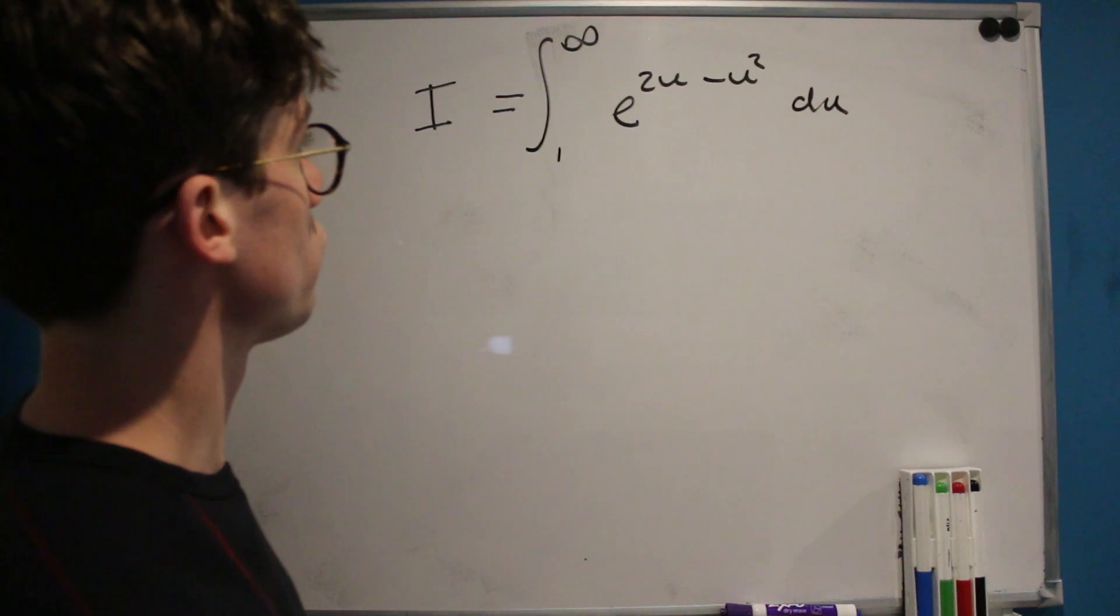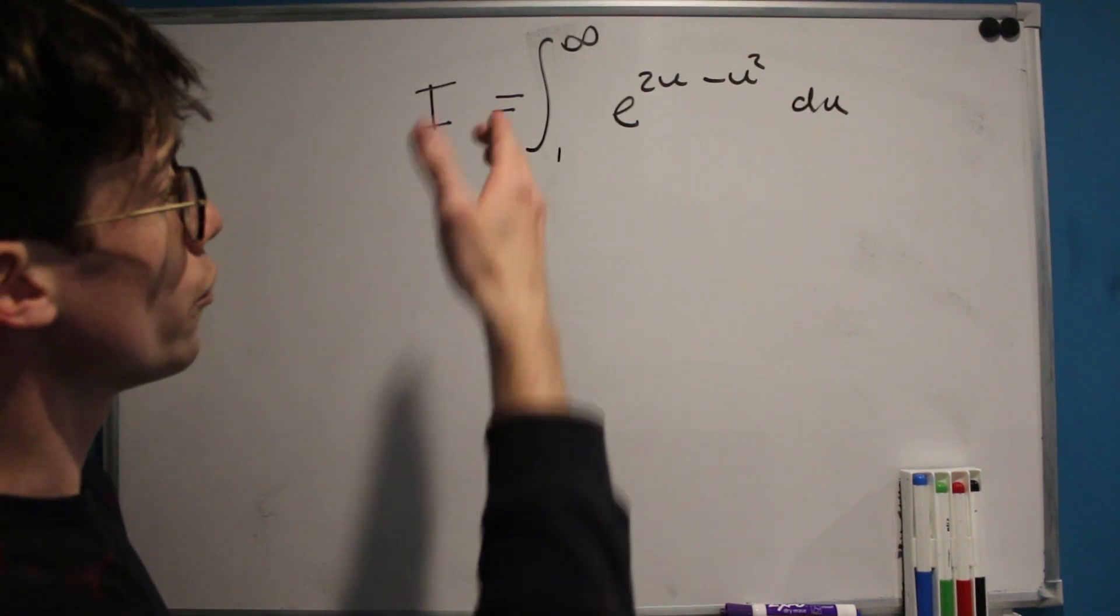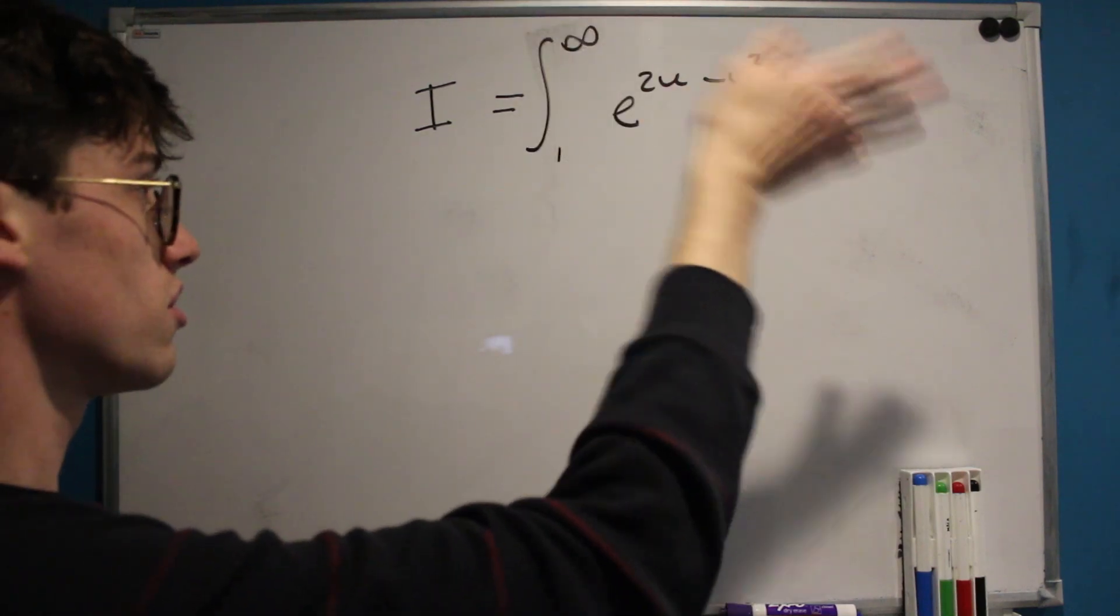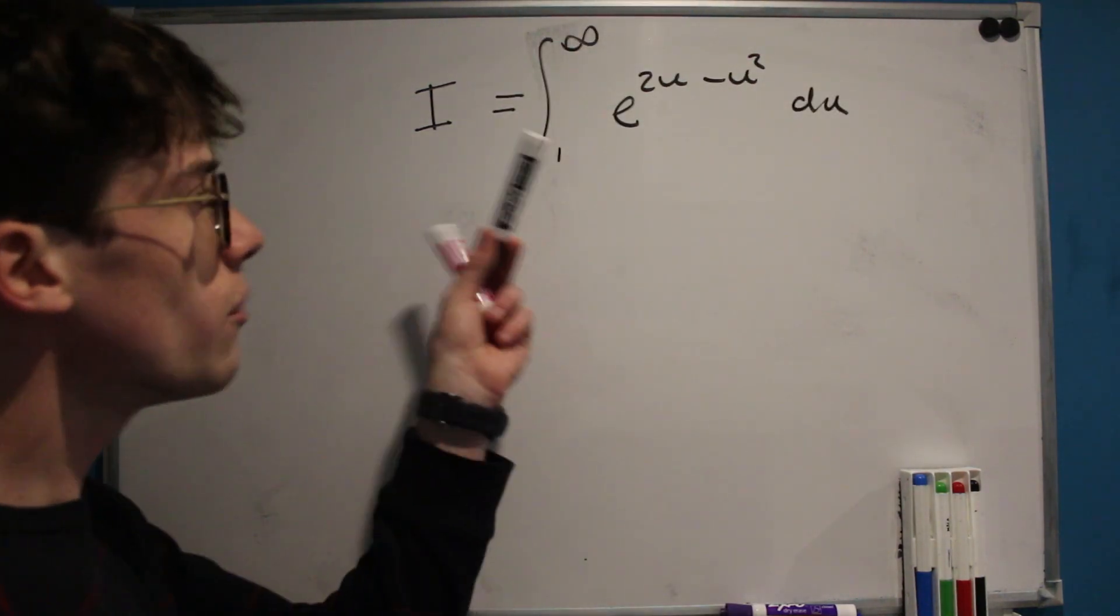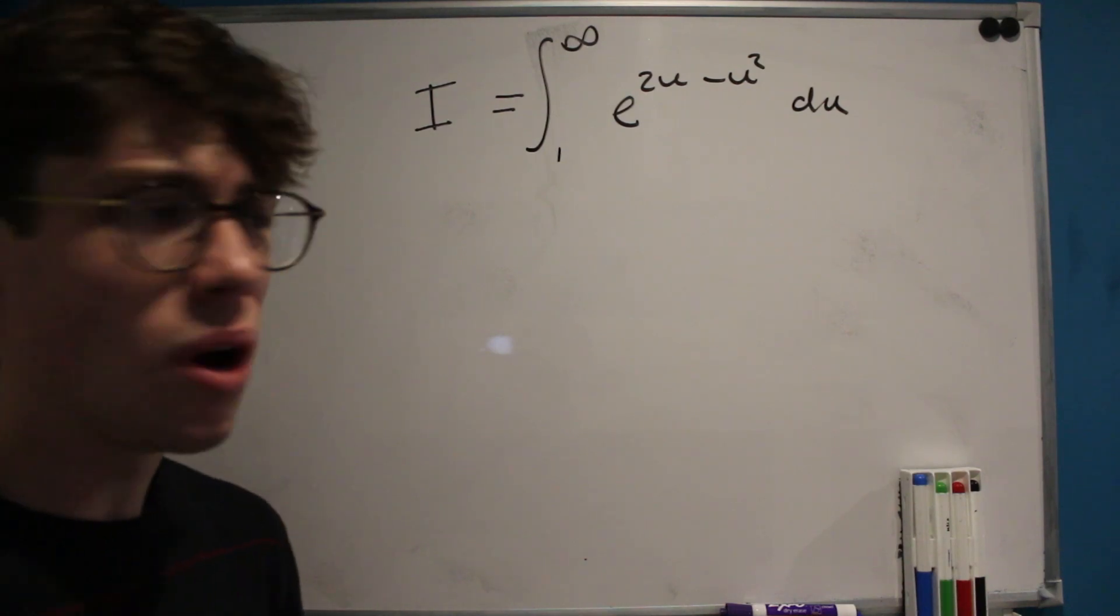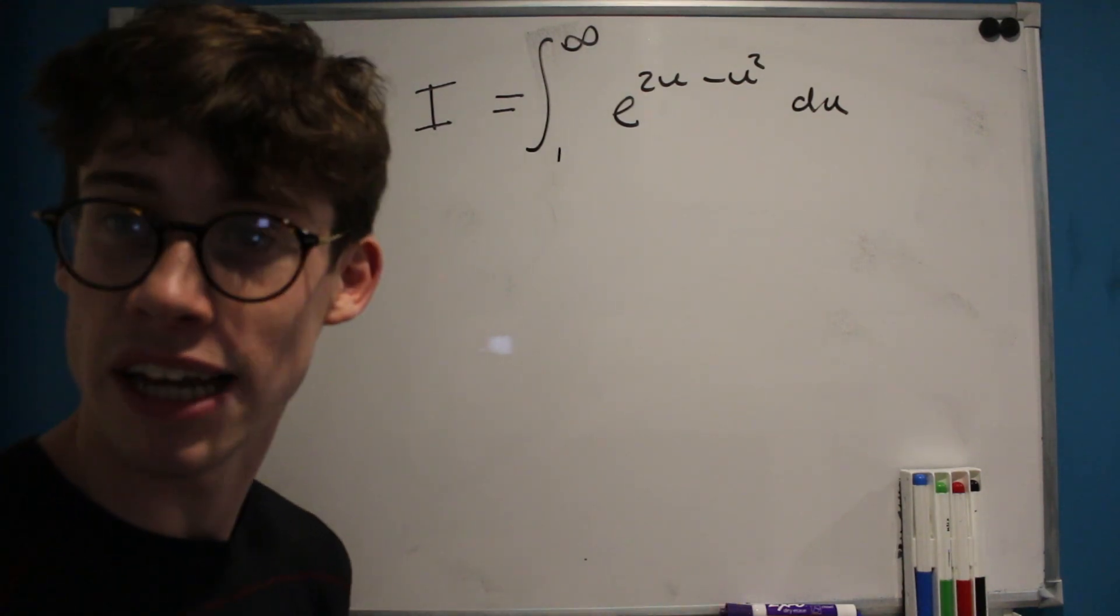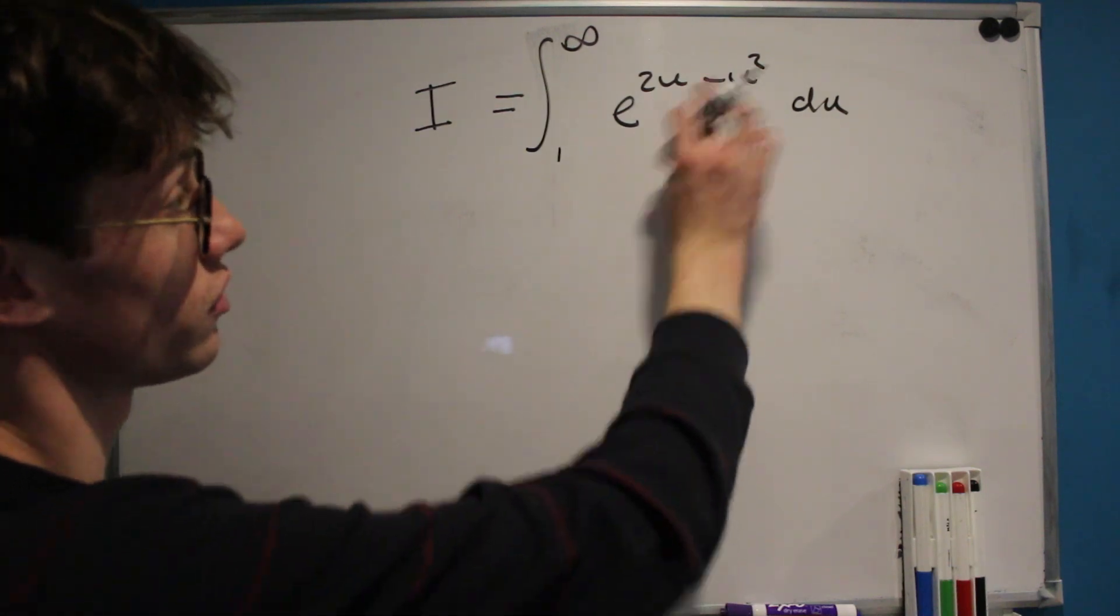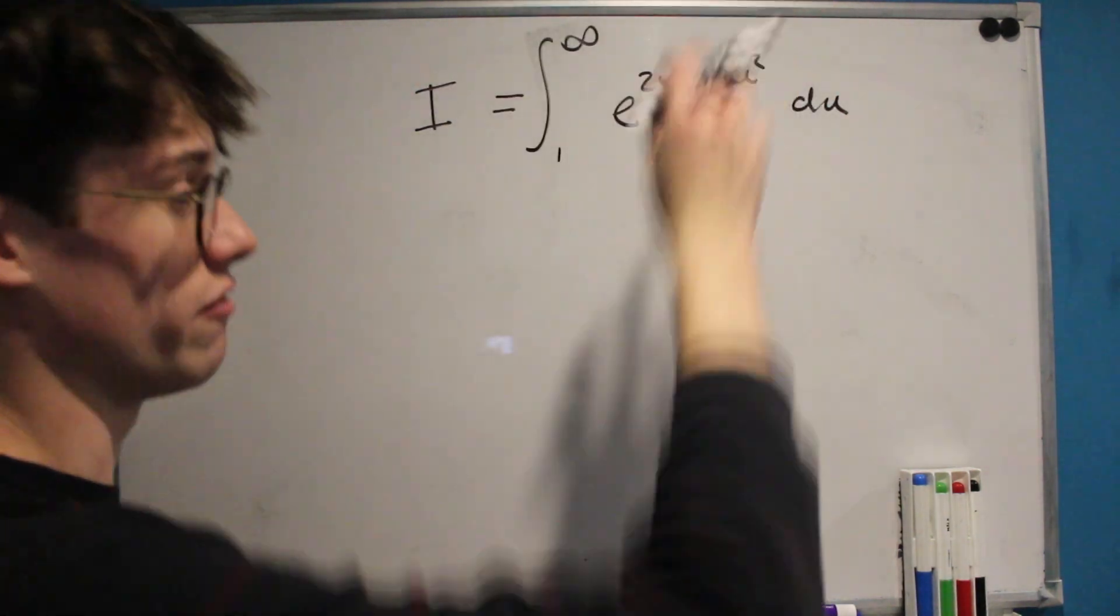So I've just made some space for us to work out on the board, and whenever I see integrals that have something that looks like this, a negative u squared and 2u, and it's something going from 1 to infinity as well, I'm thinking this looks slightly like the Gaussian integral. And it might seem like a bit of a jump to make, but actually we've got something squared and we've got an infinite upper bound.